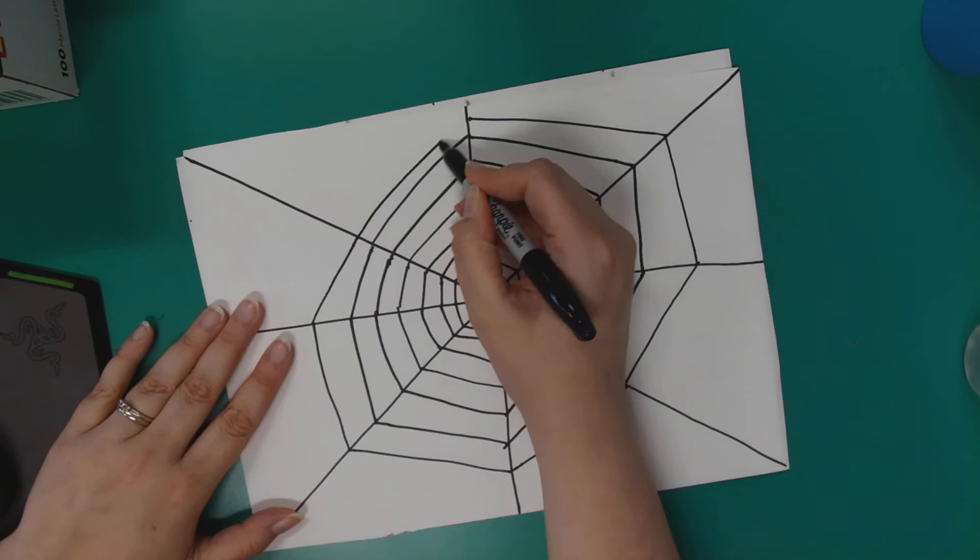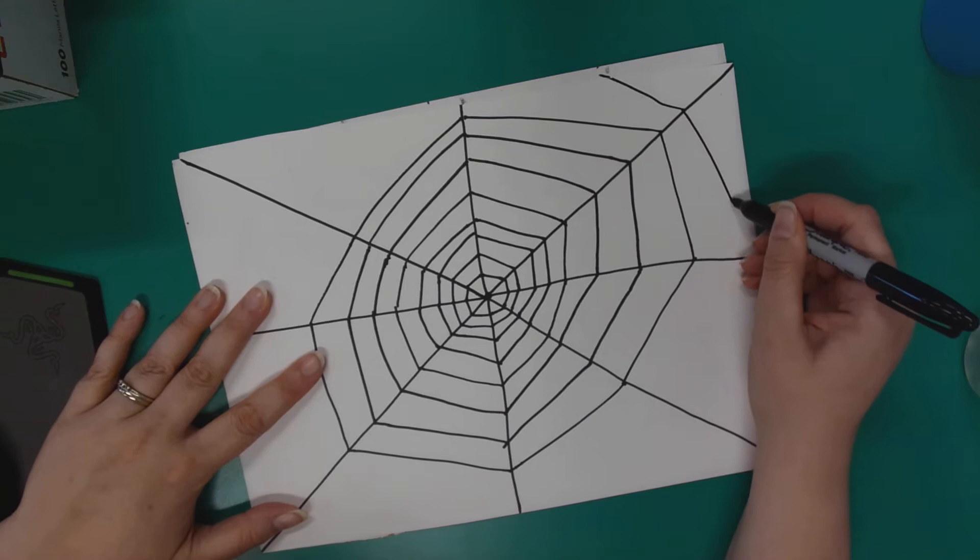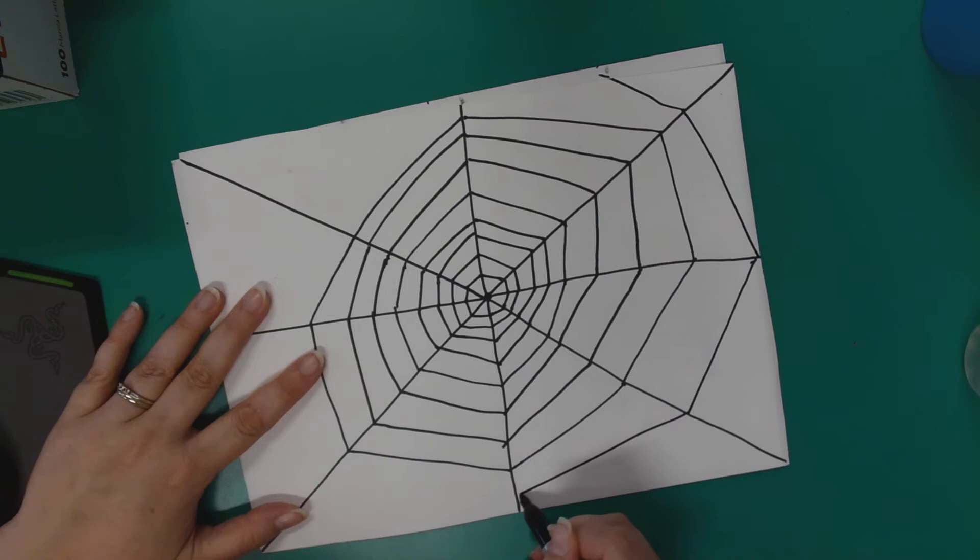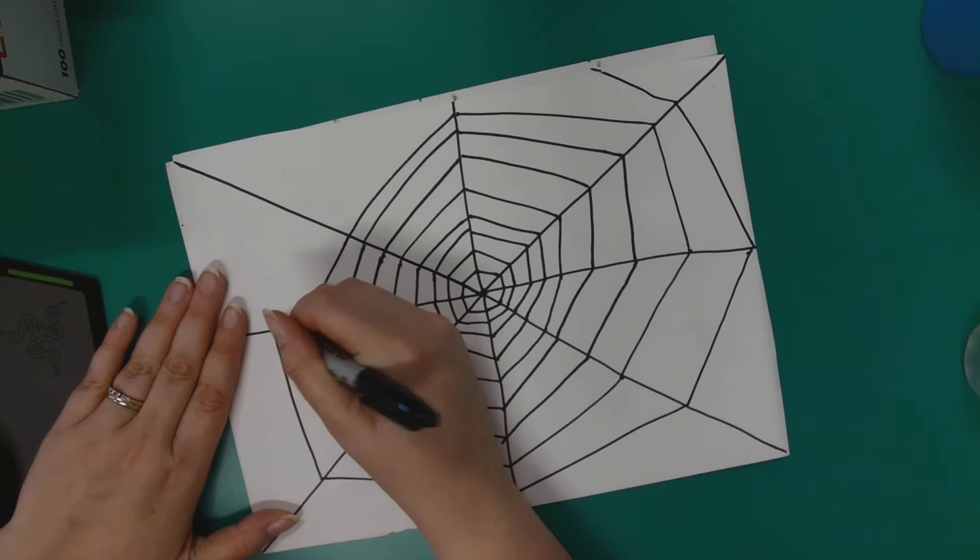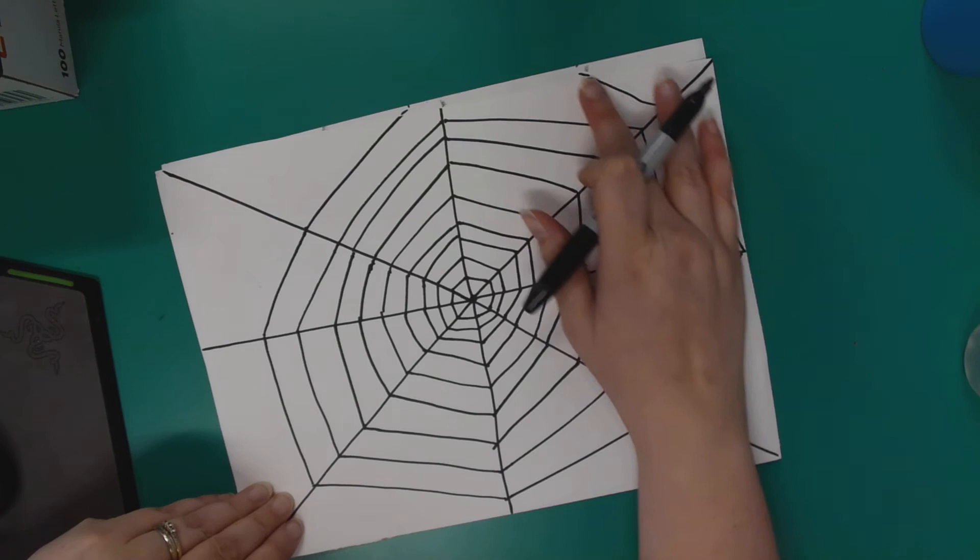When you start getting close to these edges, you can kind of go off the paper a little bit. And by off the paper, I don't mean draw on the table - don't do that. As you can see, I went off the paper.